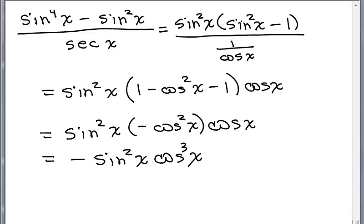And that's as far as I can go. If you wouldn't have changed sine squared X minus 1 to negative cosine squared X, your problem would look a little different. It's hard to really say what the most simplified form is, but without the minus sign it seems like this is a little bit more simplified.